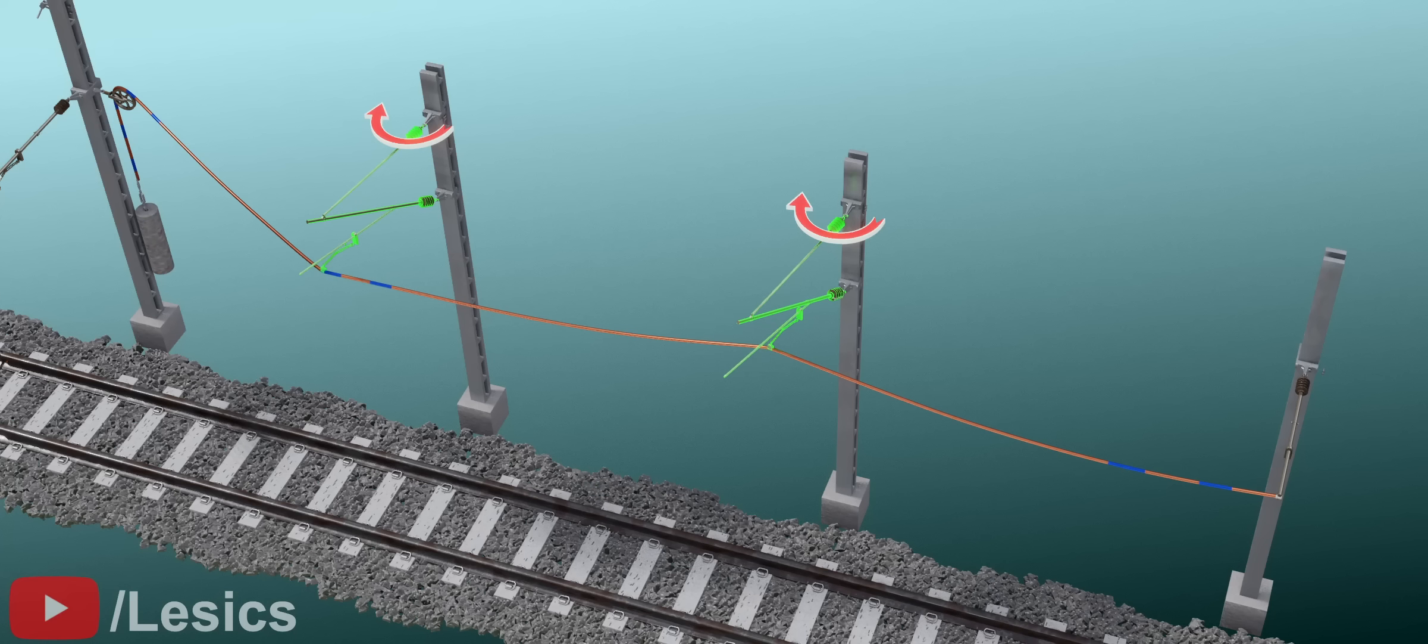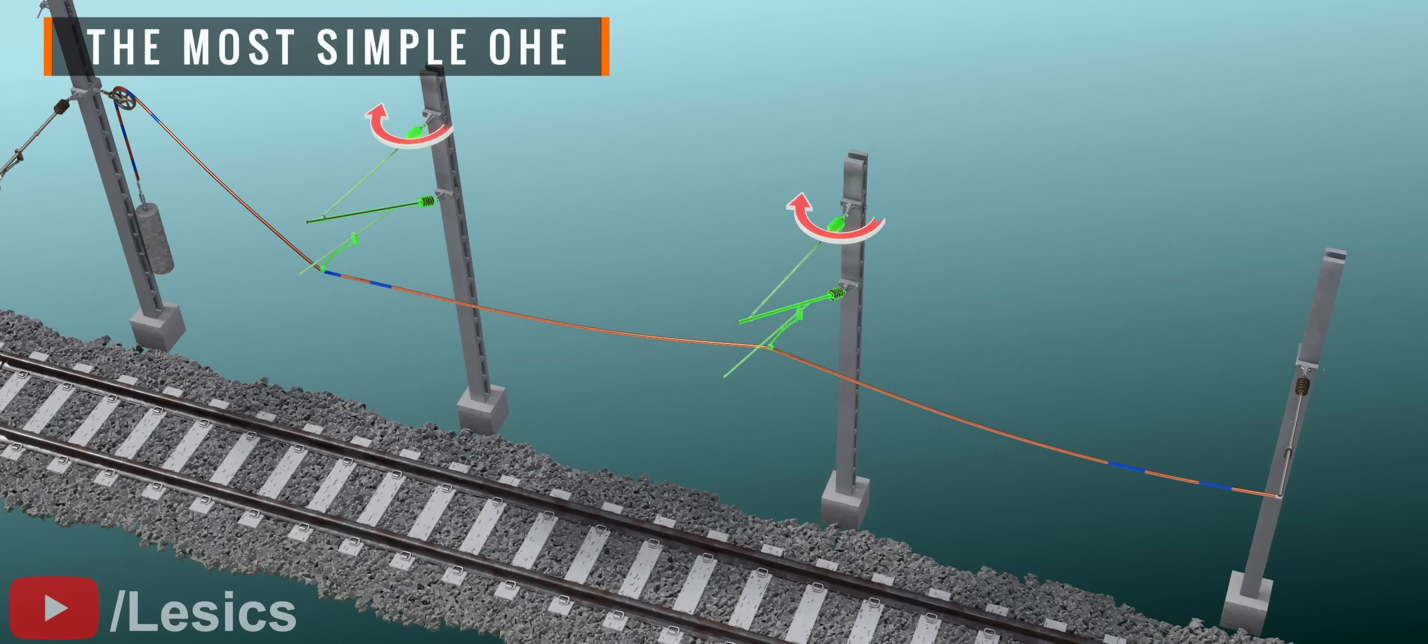Such that when the temperature variations occur, they will not block the movement of the wire. However, the last cantilever is fixed as we saw earlier. We have developed a small wire unit or overhead equipment for the electric train. Now it's time to achieve a long OHE system starting from this design.